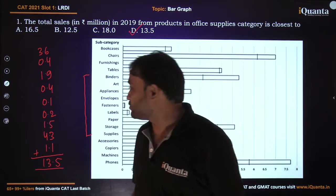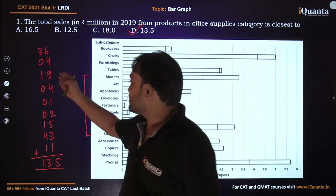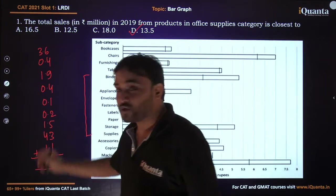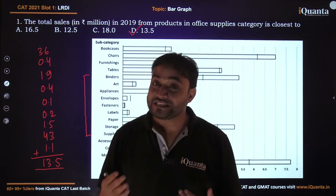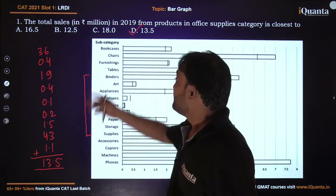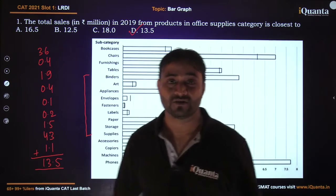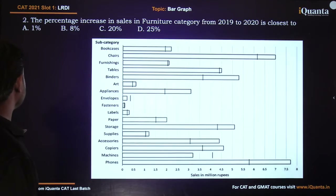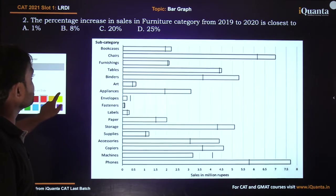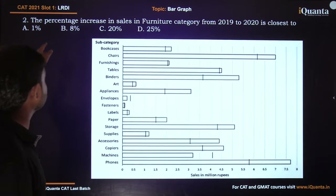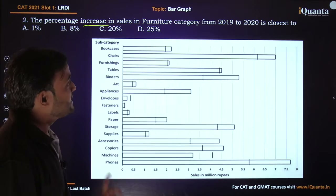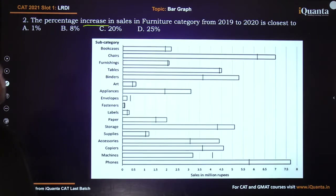You could have taken slightly different values — instead of 1.9 you could take 1.85, instead of 0.2 you could take 0.25 — but it won't change the answer much. You don't need to worry about these approximations. Now the second question asks for the percentage increase in sales in the furniture category from 2019 to 2020.